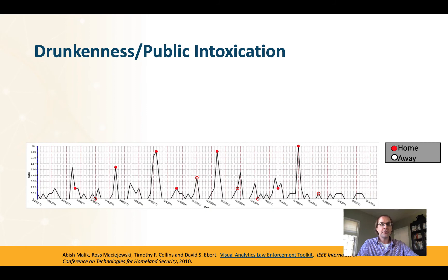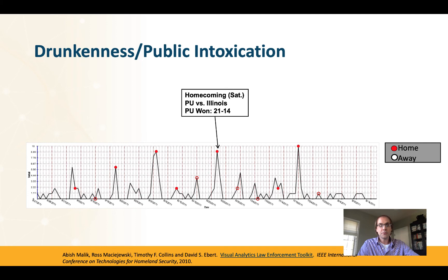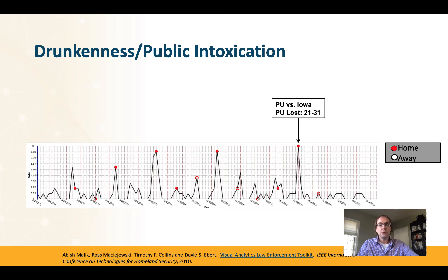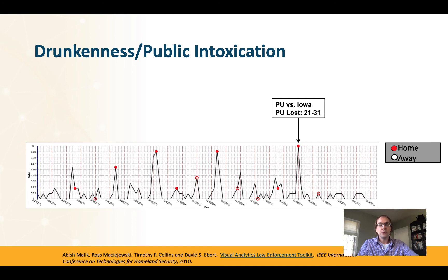Looking at a time series of public intoxication arrests, filled dots represent home games and open circles represent away games. Away games have far fewer public intoxication arrests. Low filled red dots are times when students are away — the bottom line being that if students are away during a football game, there's lower public intoxication on campus. Win or lose, Purdue home games still showed relatively big spikes. This illustrates the kinds of interesting questions people want to ask about different data sources and how we can build visuals to support decision-making.